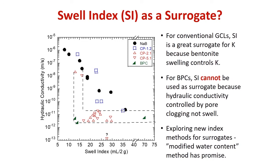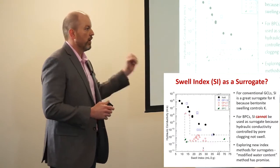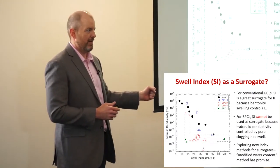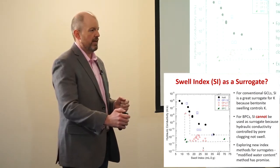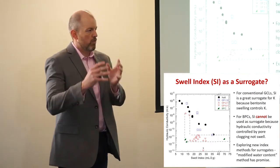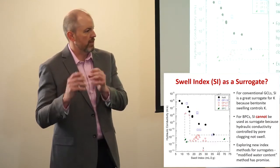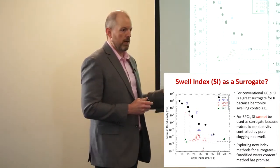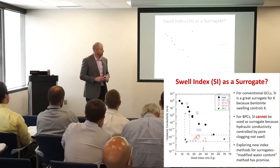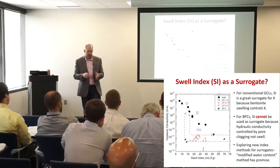We still use swell index and fluid loss in the product evaluation process. What we've learned is that swell index is a great indicator for plain bentonite and DI water — confirming it will perform as a hydraulic barrier — but it's not such a great indicator when running a swell test with brine, liquor, or leachate with a polymer-amended bentonite.